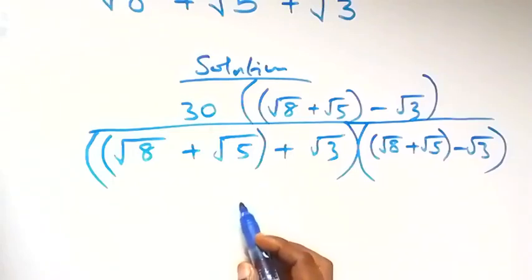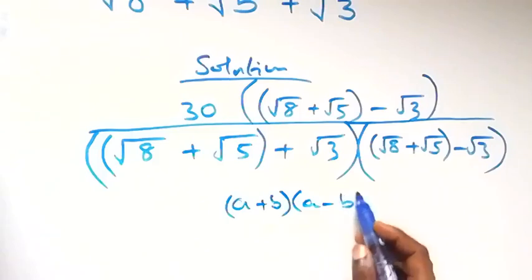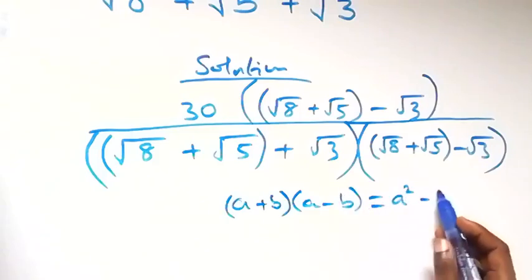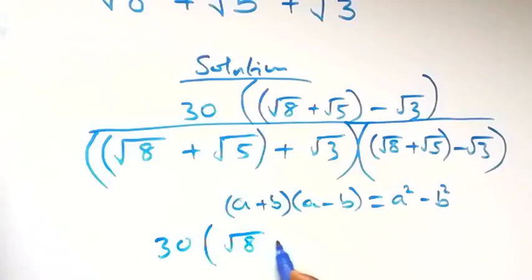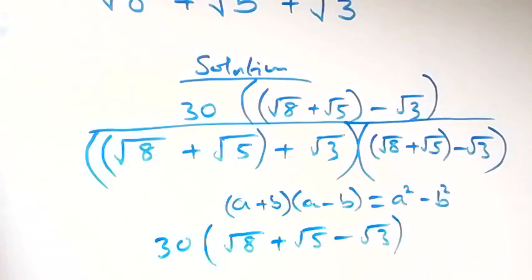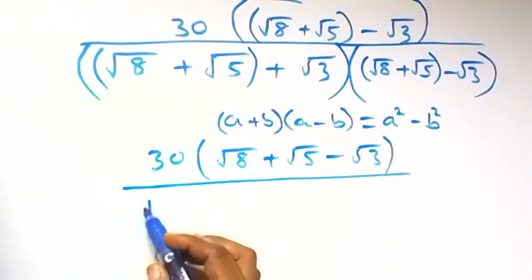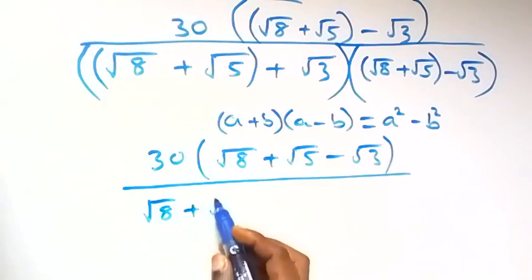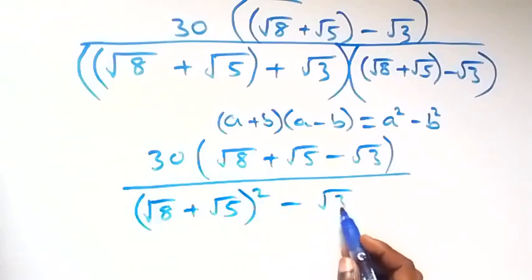The product of conjugates follows the pattern: a plus b multiplied by a minus b, which is the same thing as a squared minus b squared. So up here we have 30 into bracket root 8 plus root 5 then minus root 3, and in the denominator this becomes root 8 plus root 5 all squared, then minus root 3 squared.